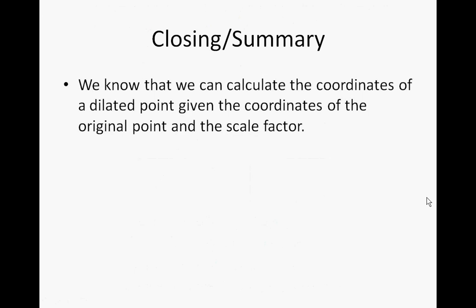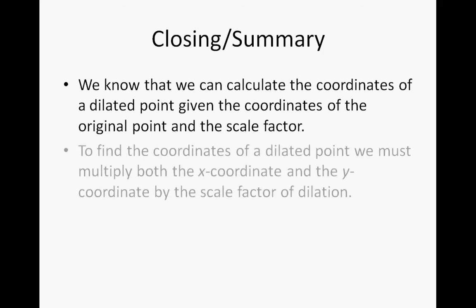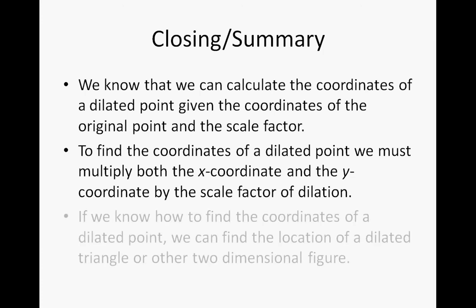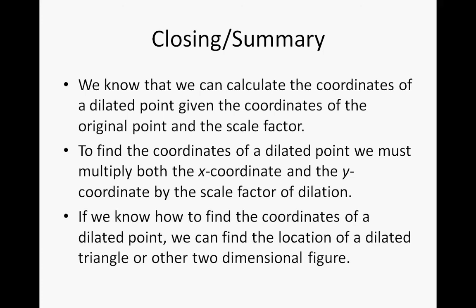We know that we can calculate the coordinates of a dilated point given the original coordinates and the scale factor. To find the coordinates of a dilated point, multiply both the x-coordinate and the y-coordinate by the scale factor of dilation. If we know how to find the coordinates of a dilated point, we can find the location of a dilated triangle or other two-dimensional figure. The key point is that all of this applies when radiating from the origin of the coordinate graph. We'll see you in class.